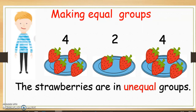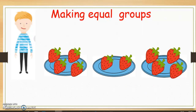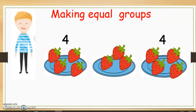The strawberries are in unequal groups. Now let's help Sam make his groups equal. He has four strawberries on the first plate and four strawberries on the last plate, so he needs to put four strawberries on the middle plate. At the moment he has two strawberries, so let's make four: three, four. Now he has four strawberries on each plate, so his groups are equal.